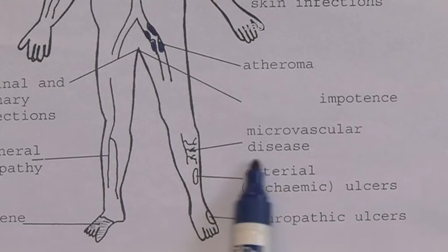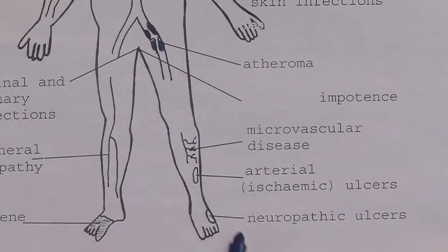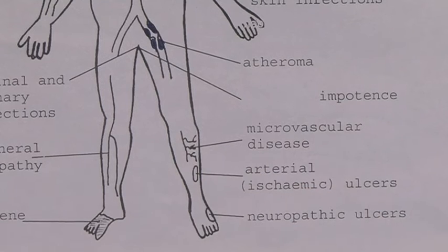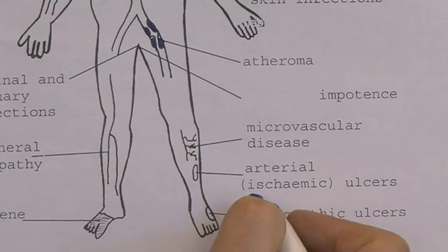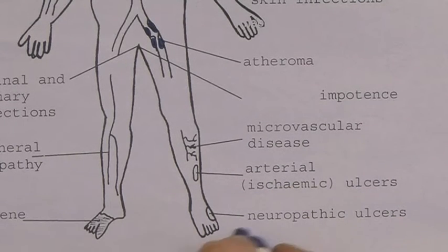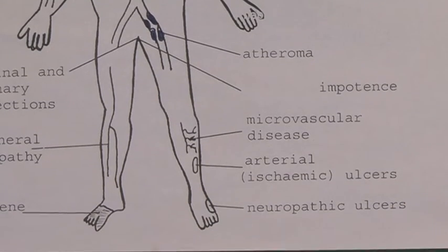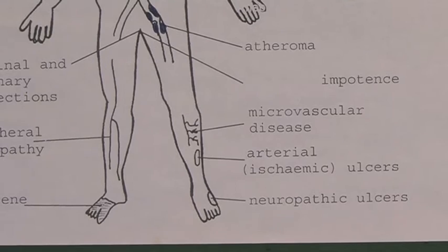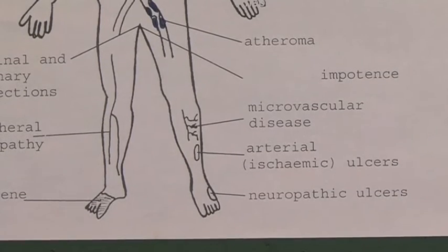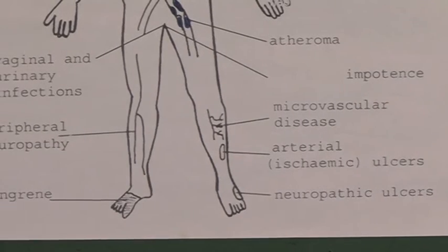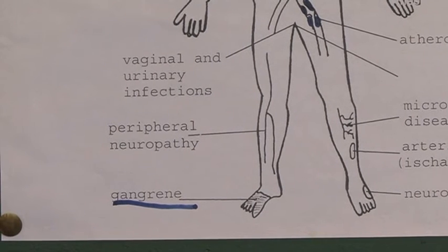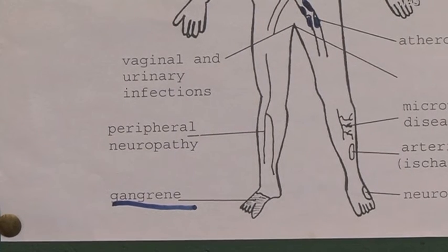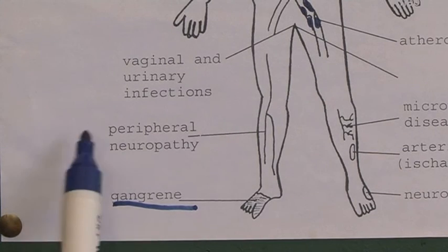Microvascular disease is going to affect the eyes, the kidneys, and it can affect the small peripheral nerves in the leg, leading to neuropathy. Ulcers are a possibility — ischemic ulcers can develop in the leg, and neuropathic ulcers can develop in the feet, very often under callus, leading to areas of infection. If bad enough, that can lead to frank gangrene, where there's total ischemia of the distal tissues and they go black.